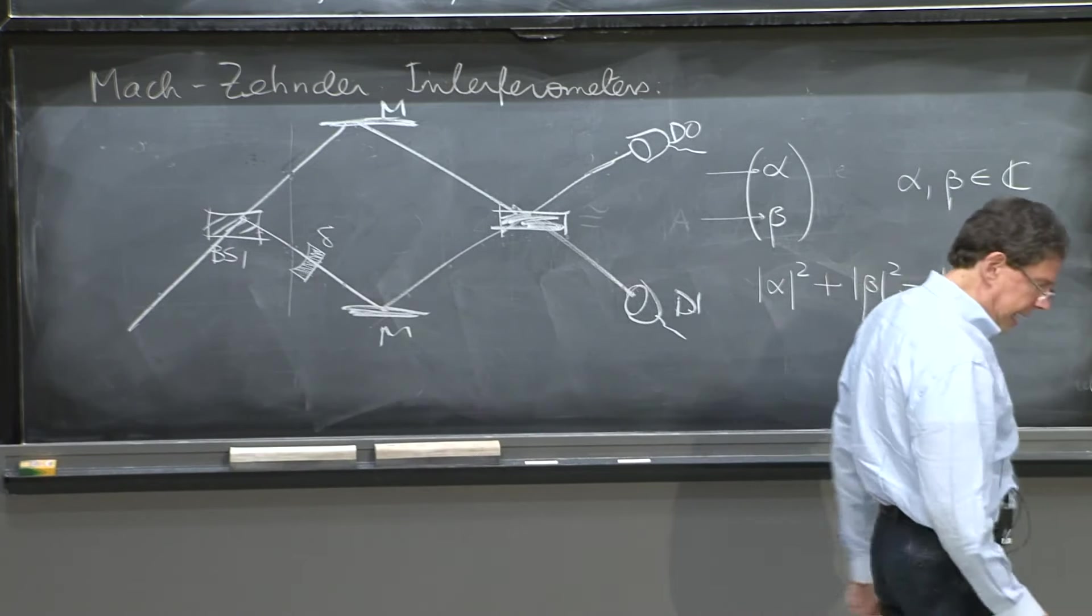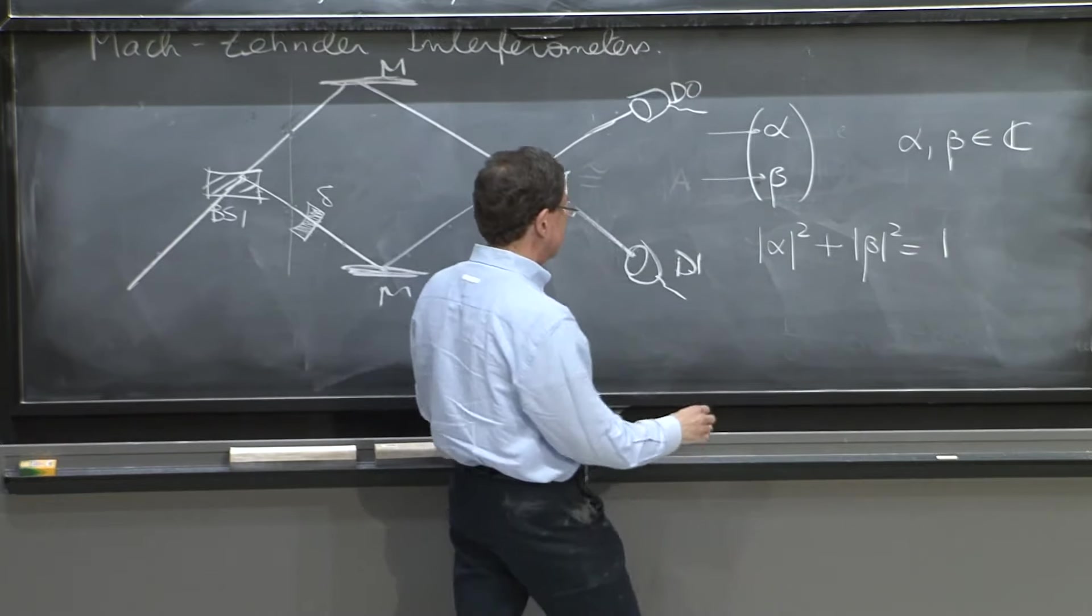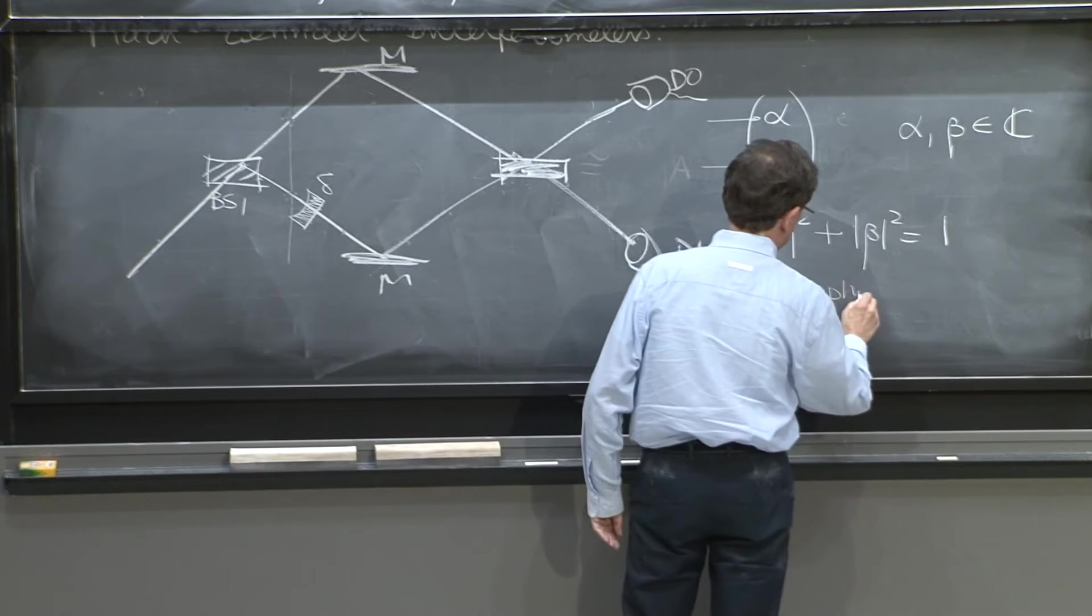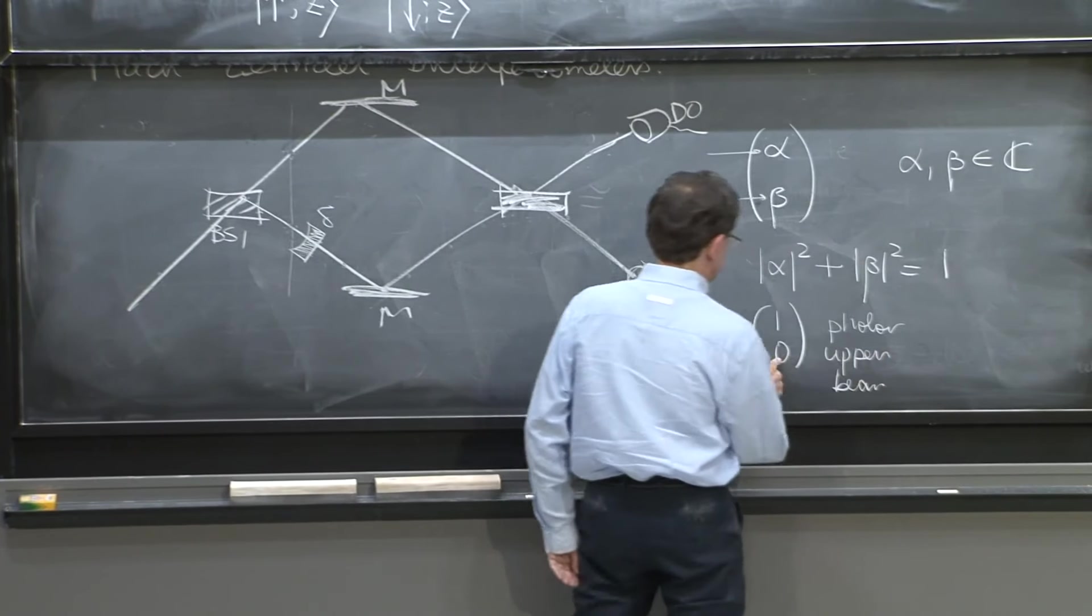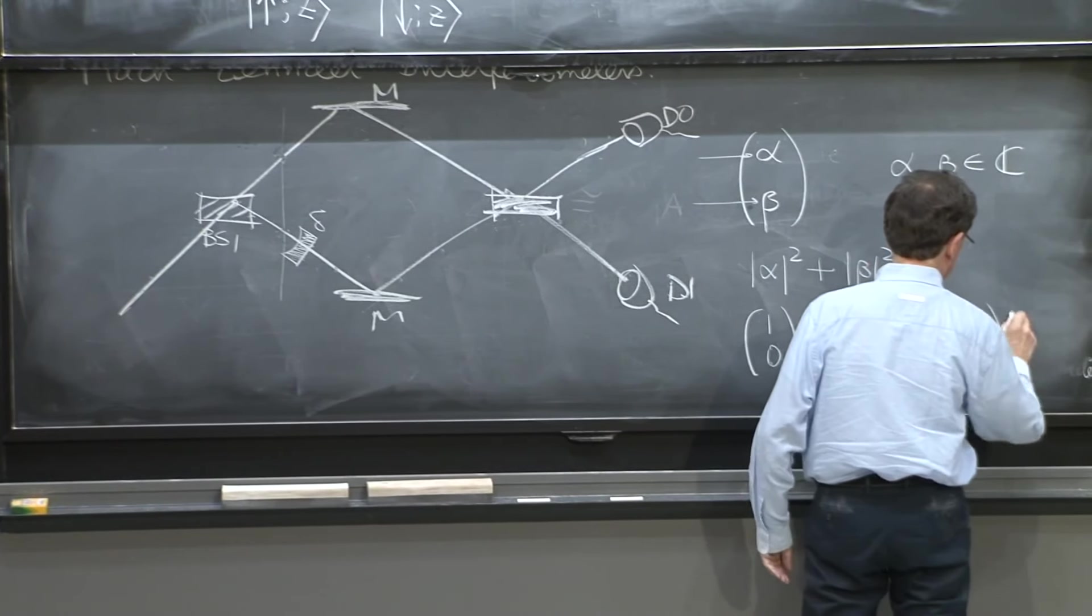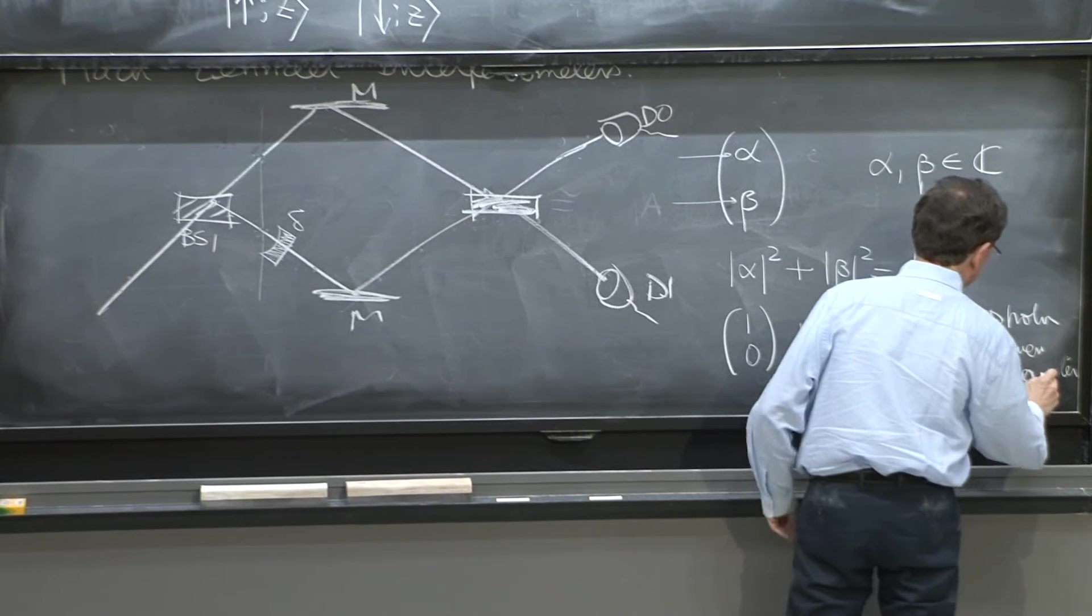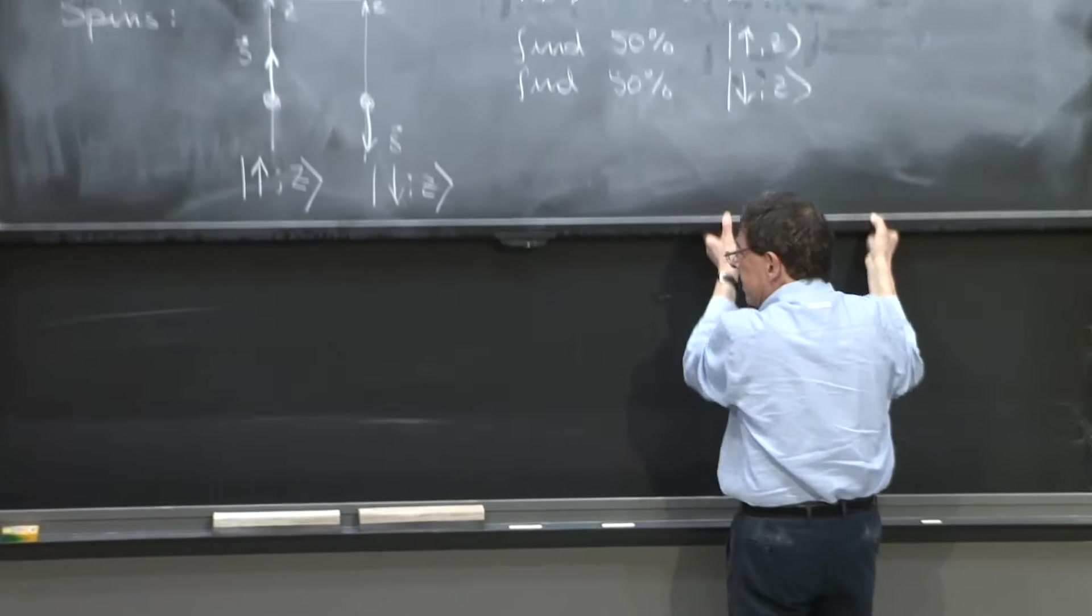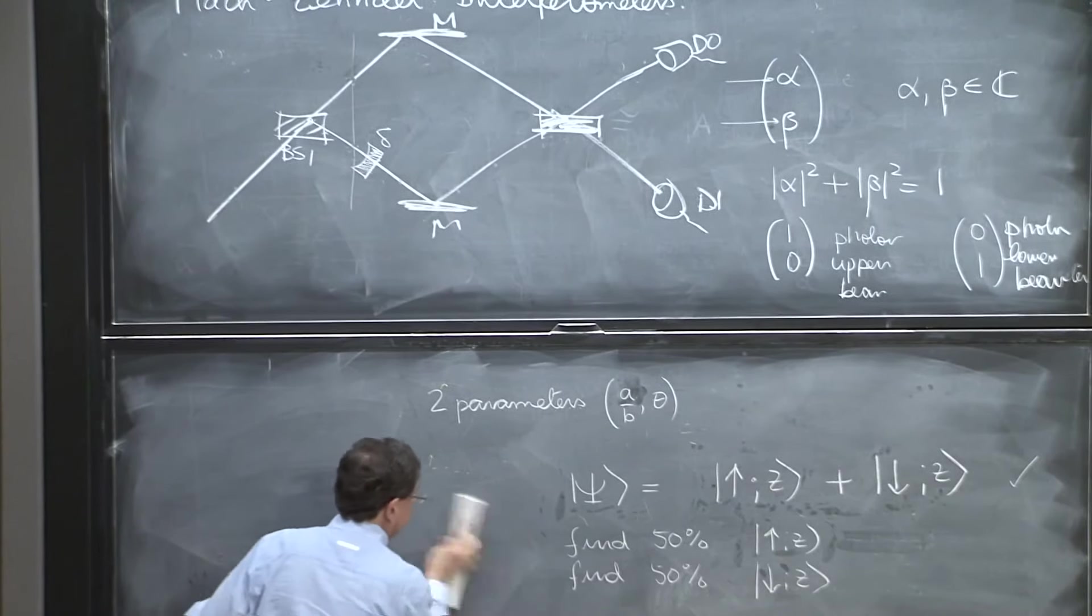So on the other hand, I may have a state that is like this, alpha. I'll mention other states. State (1,0) is a photon in the upper beam. No probability to be in the lower beam. And the state (0,1) is a photon in the lower beam. So these are states. And indeed, think of superposition.